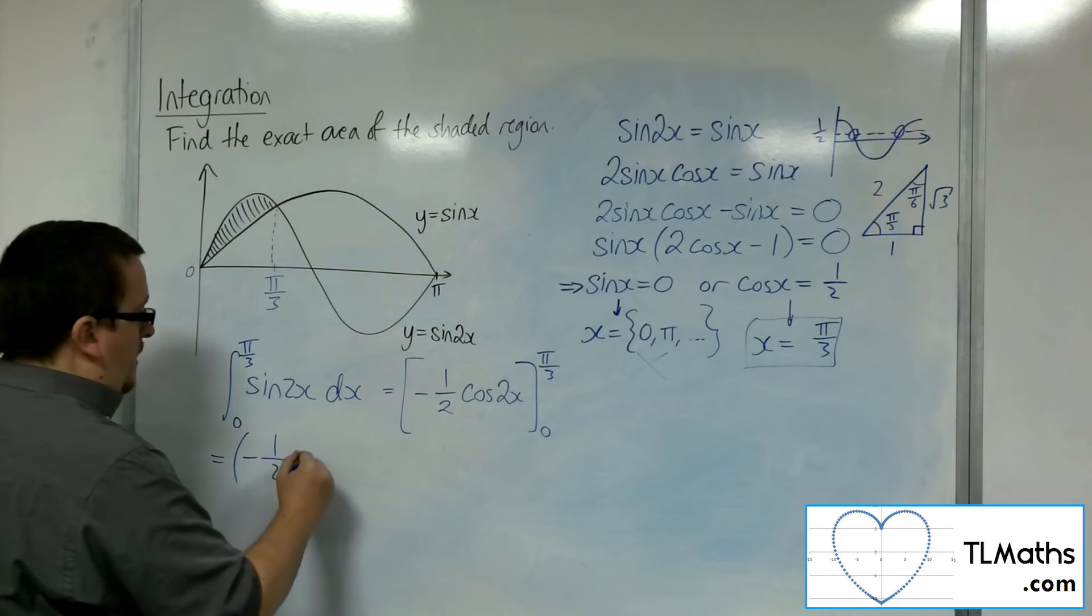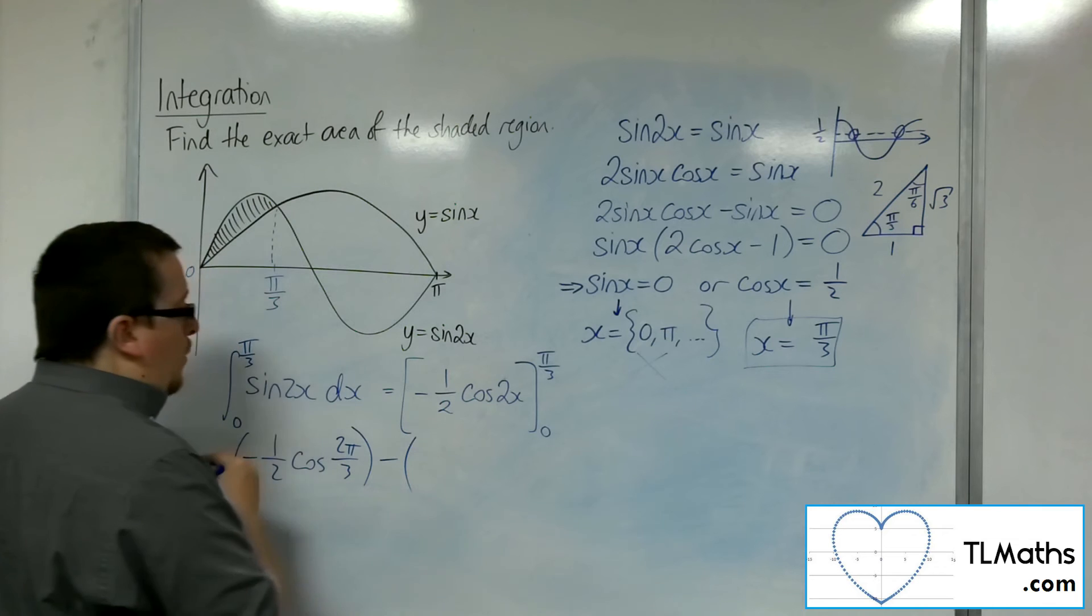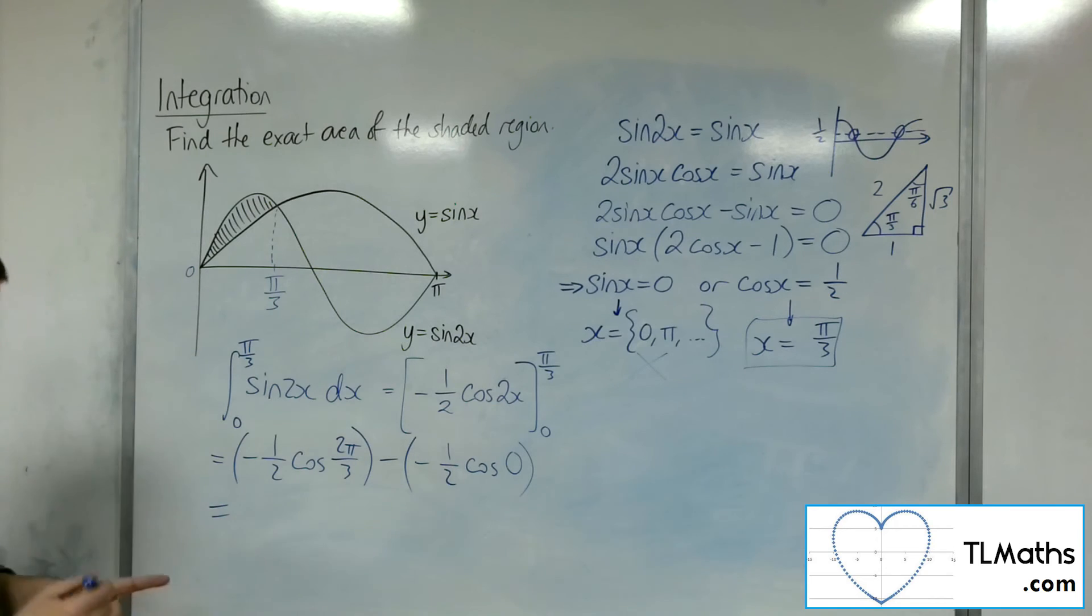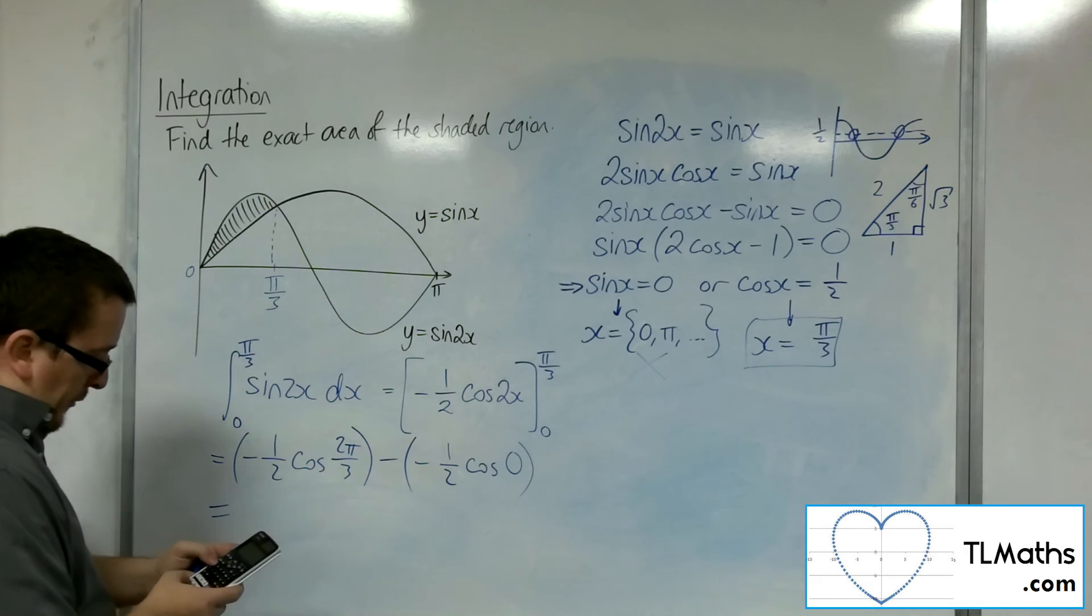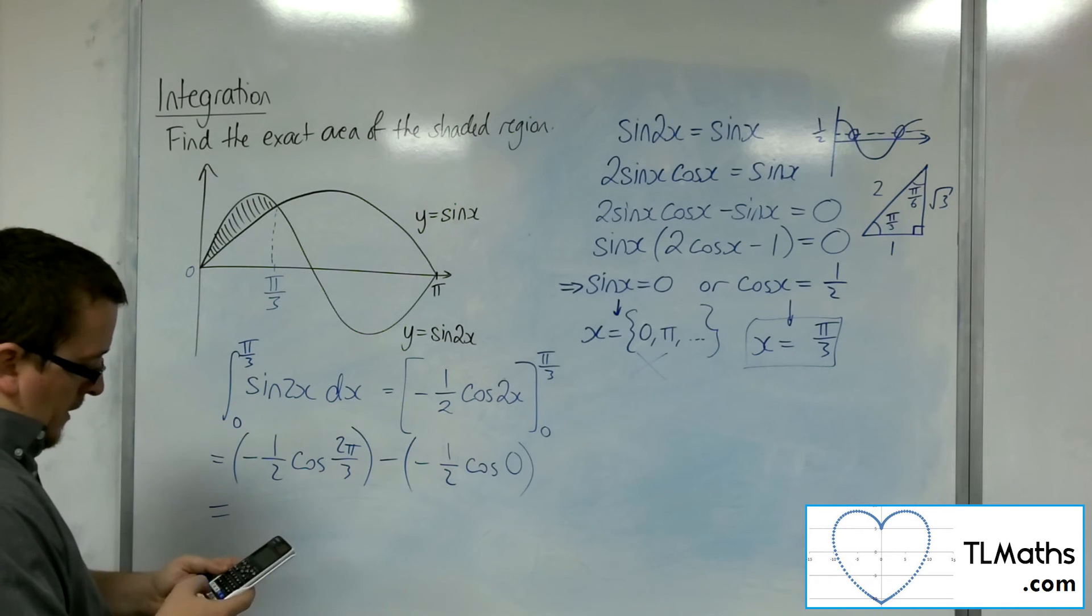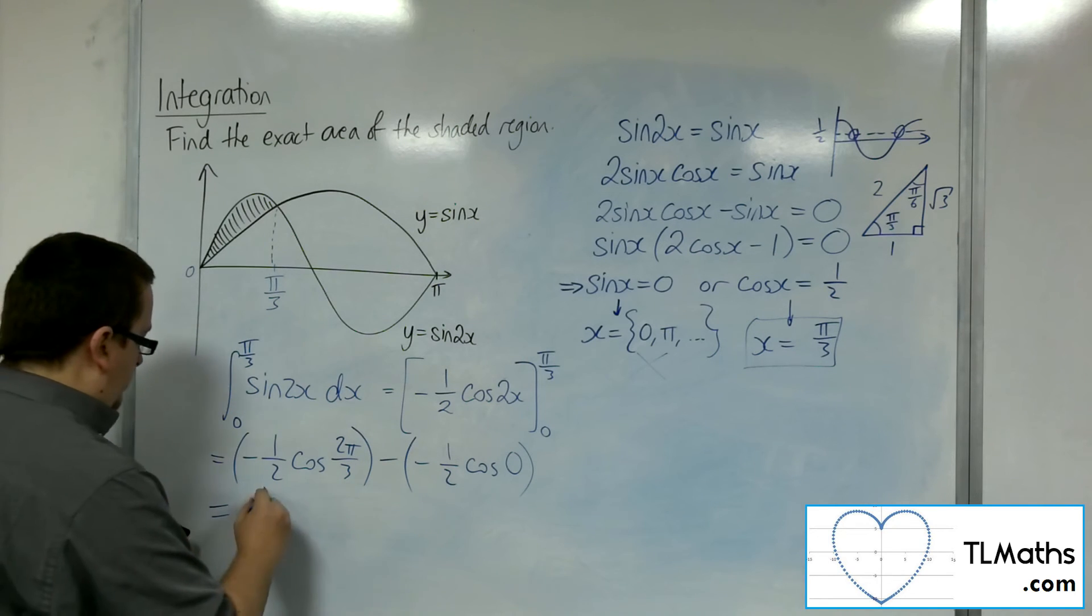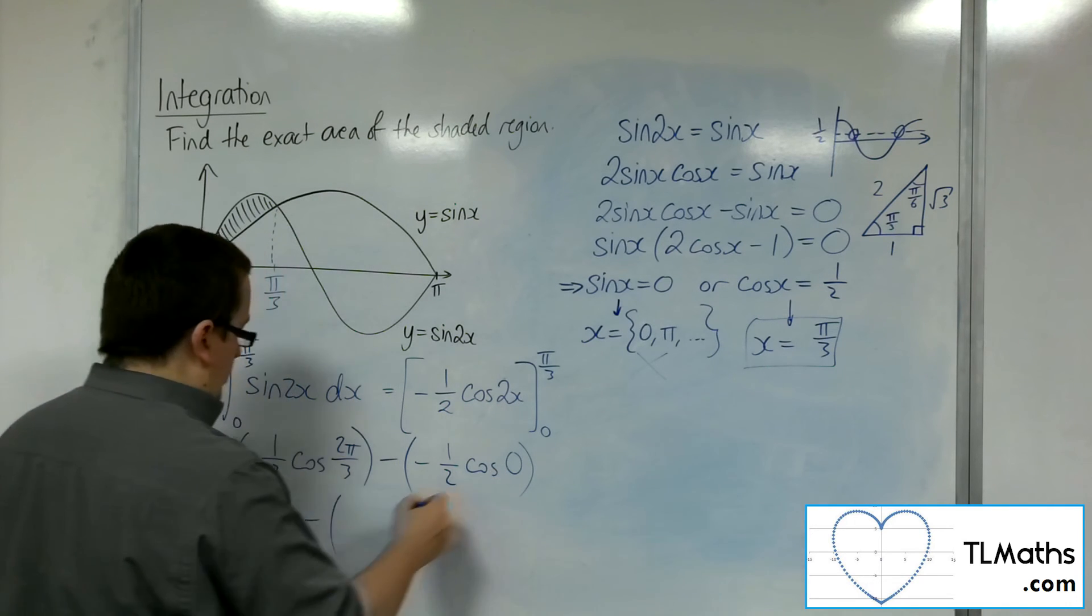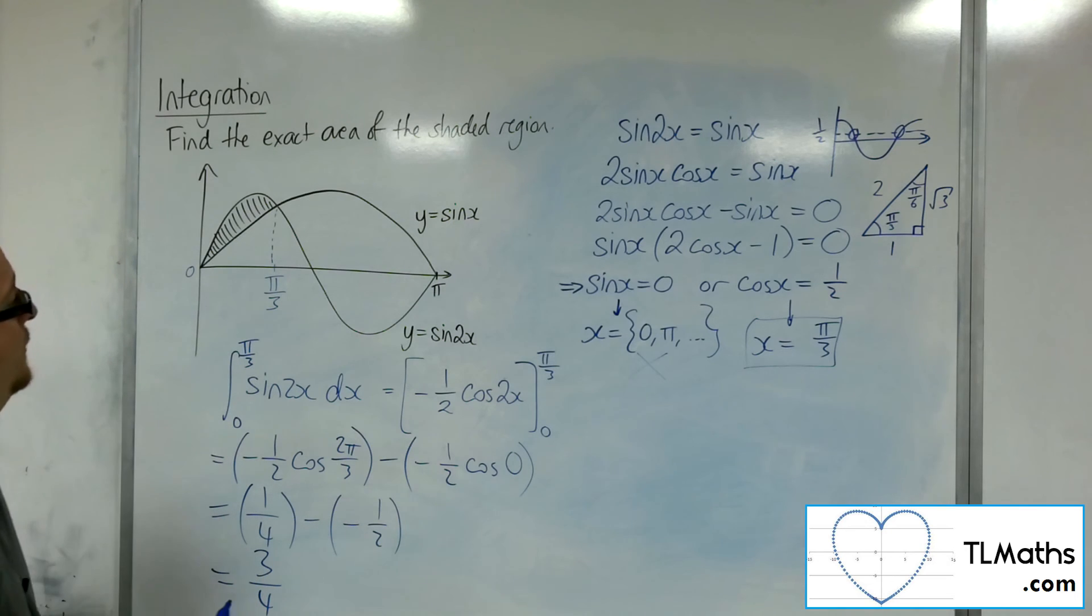So open up a bracket. We're going to have minus 1 half cosine of 2 pi over 3. And then take away substituting in the 0, so minus 1 half cosine of 0. So minus 1 half times cosine of 2 times pi over 3 is 1 quarter. Take away minus 1 half times 1. So we've actually got 1 quarter plus 1 half. So that's 3 quarters.